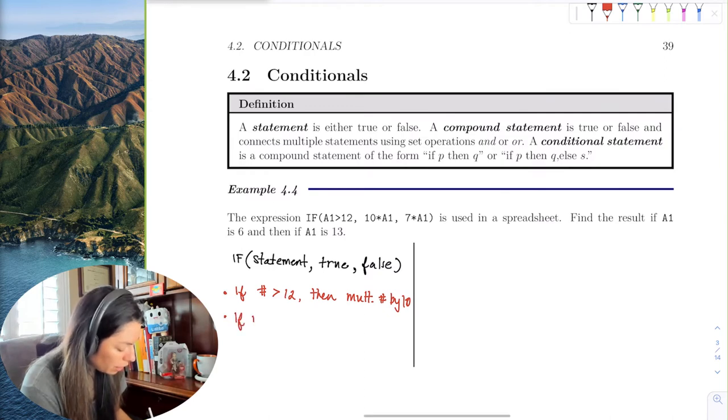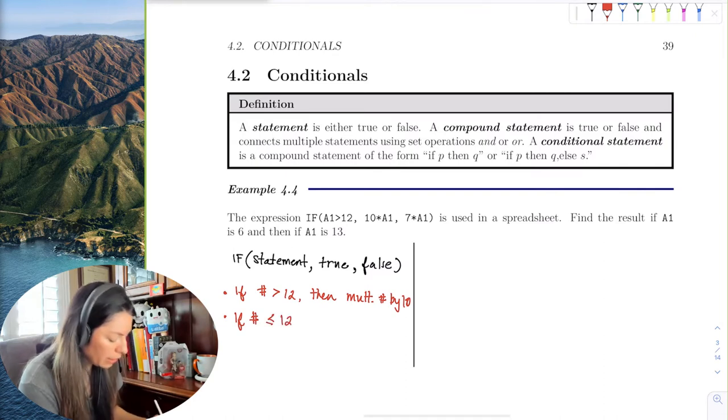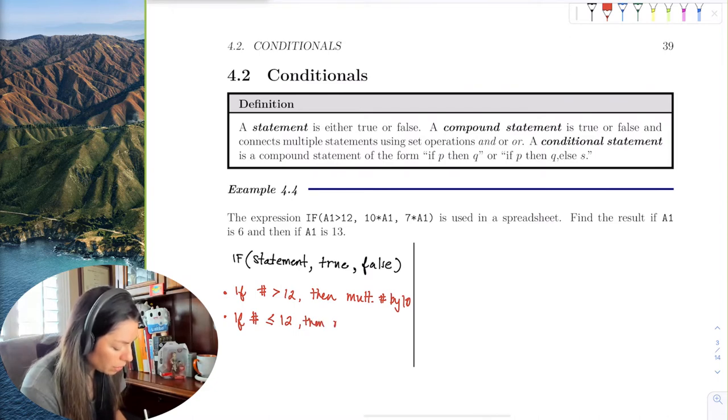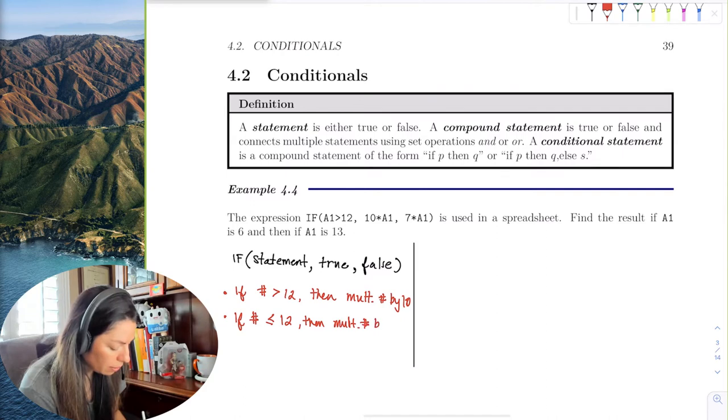If the number is less than or equal to 12 (that would be not greater than 12), then multiply it by 7.